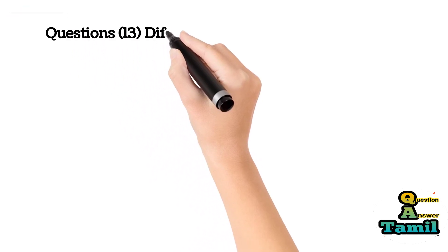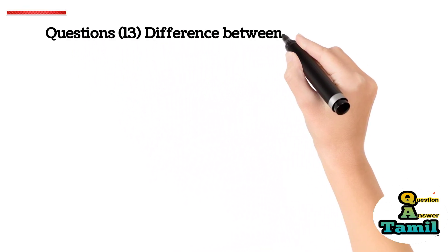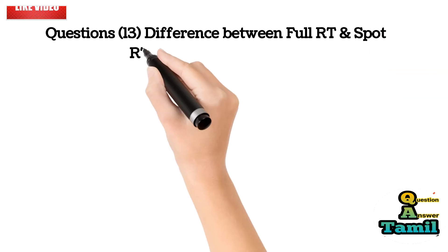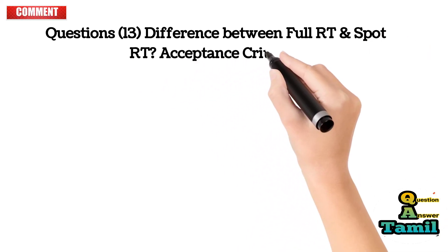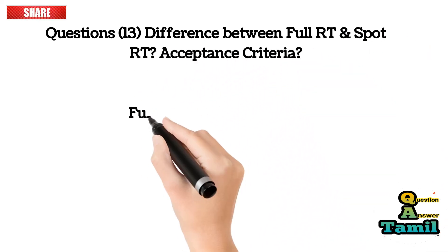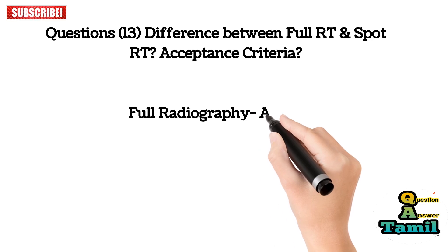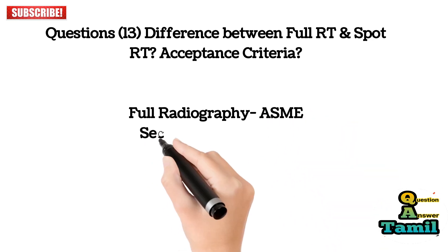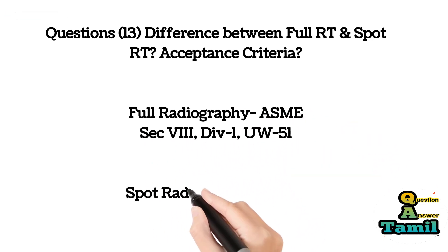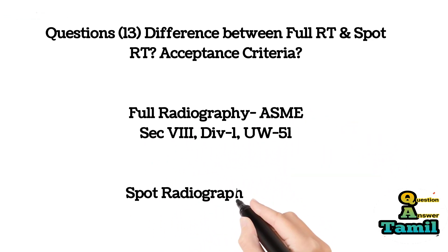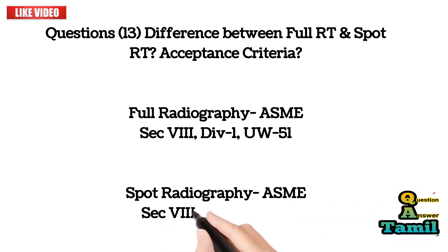Question 13: What is the difference between full RT and spot RT acceptance criteria? Full radiography: ASME Section 8, Division 1, UW-51. Spot radiography: ASME Section 8, Division 1, UW-52.